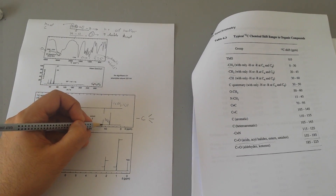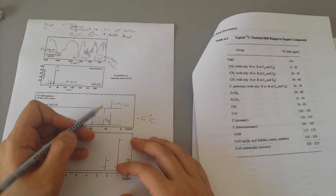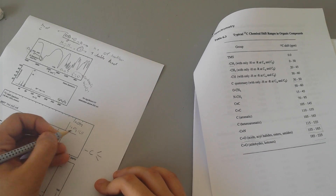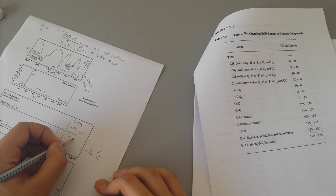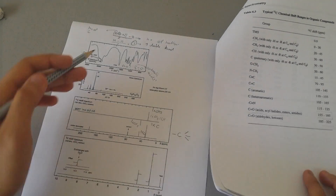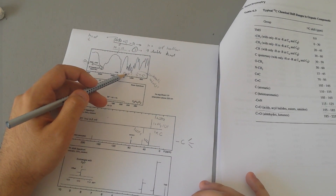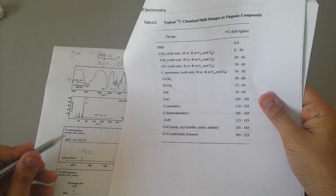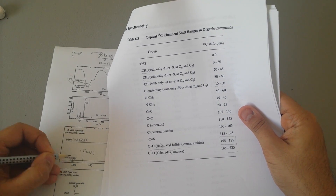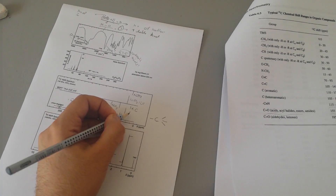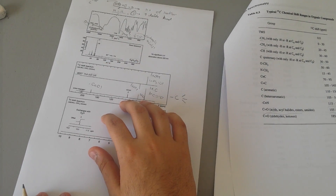We also have one peak pointing up in the proton-decoupled spectrum but pointing down in the DEPT — that means it's CH2. So far we have: 1 CH2, 1 CH3 or CH, and 1 quaternary carbon. This also confirms carboxylic acid over ketone, because the carbonyl carbon peak position in CNMR falls in the acid range here, not the ketone range.